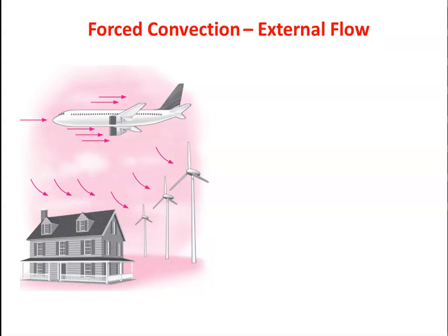What is basically forced convection external flow? Look at the diagram. We have an aeroplane: when the aeroplane is moving, air is forced over its surface and there is heat transfer depending on the temperature difference between the fluid and the surface. Similarly, a windmill rotating has forced convection heat transfer between air and the blade. A building also has heat transfer between air and its roof or wall surface. There are many such engineering examples.